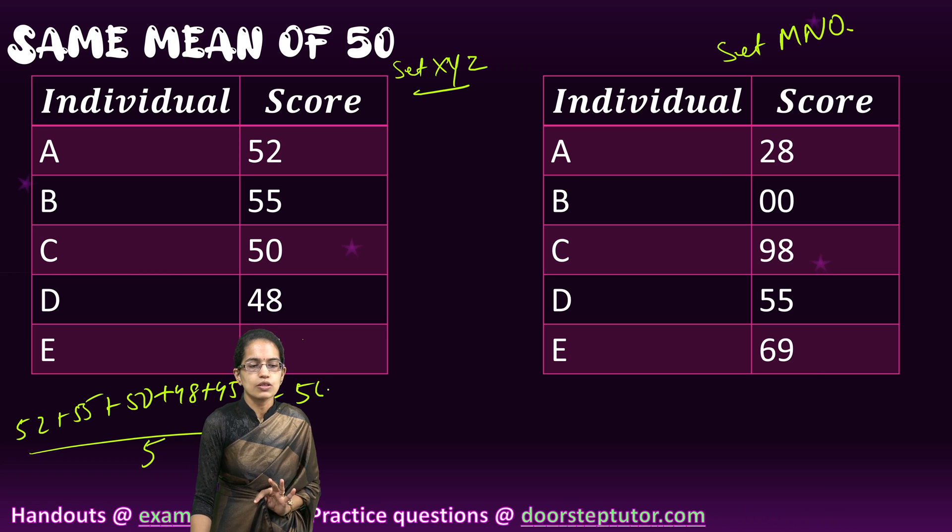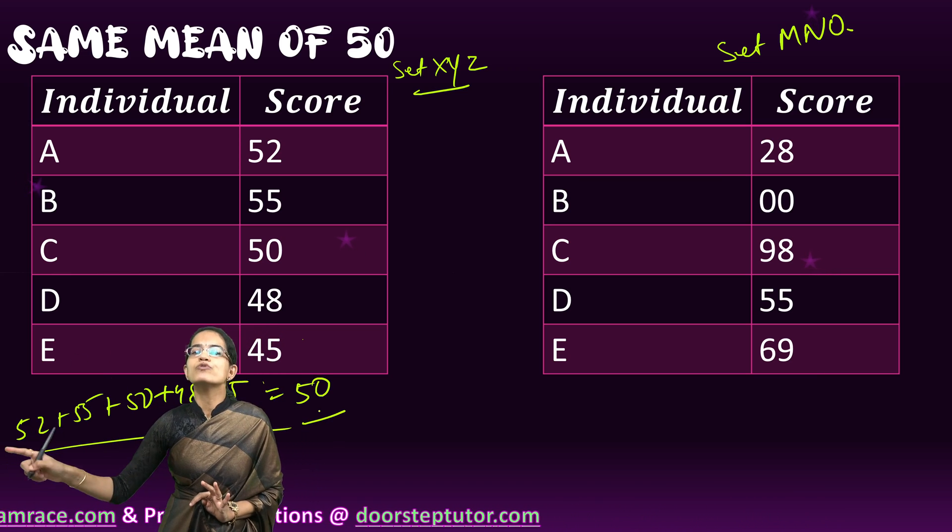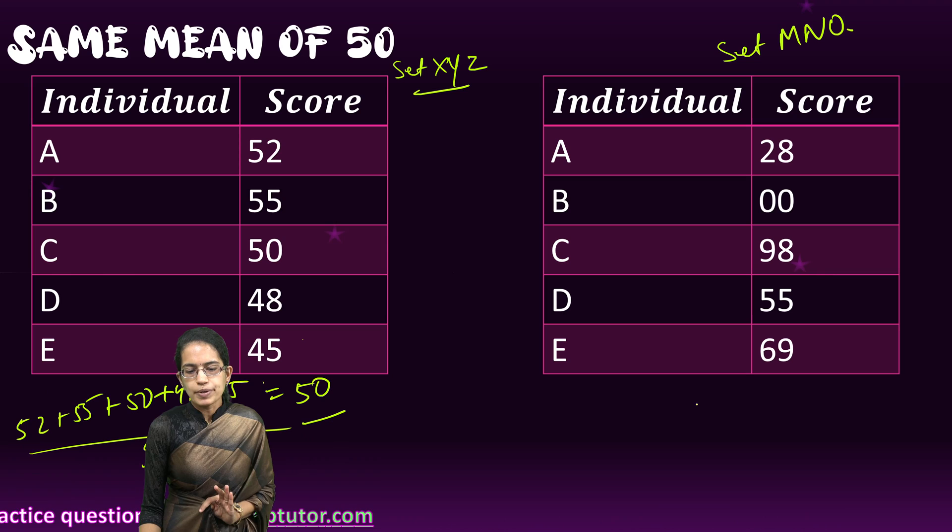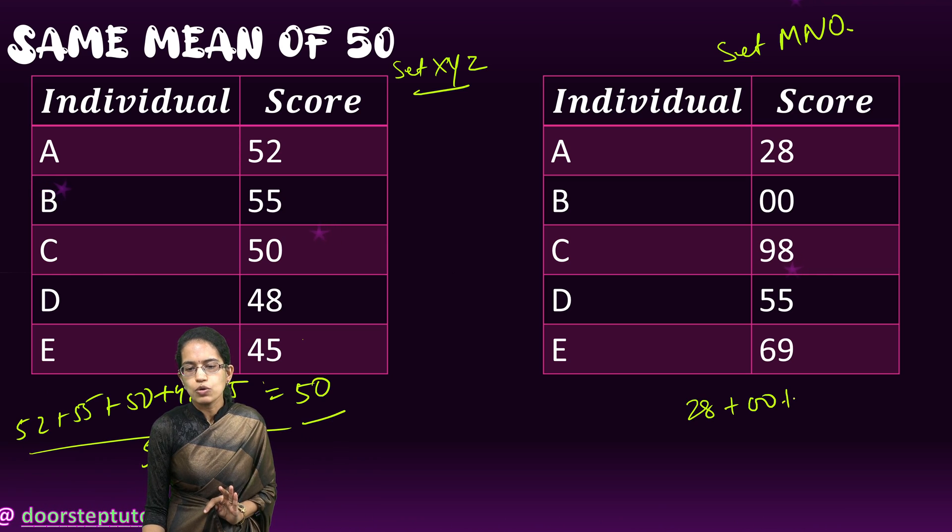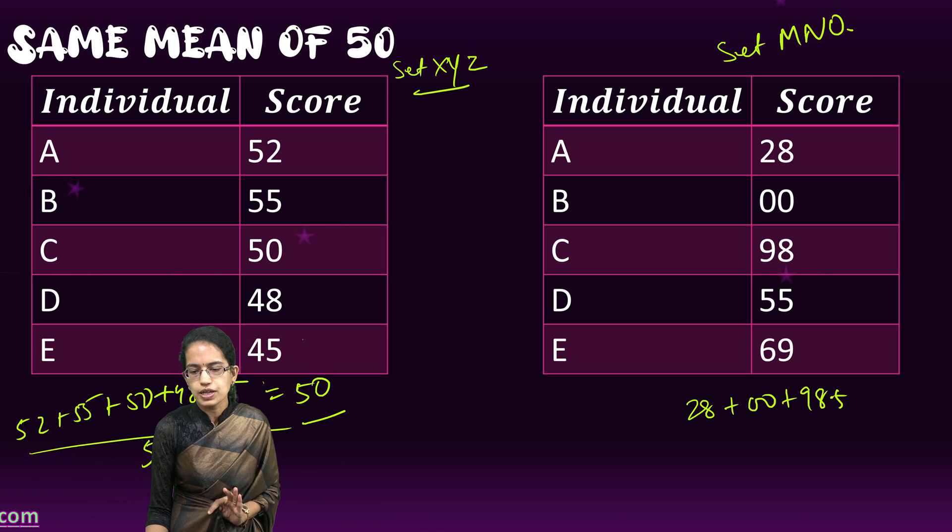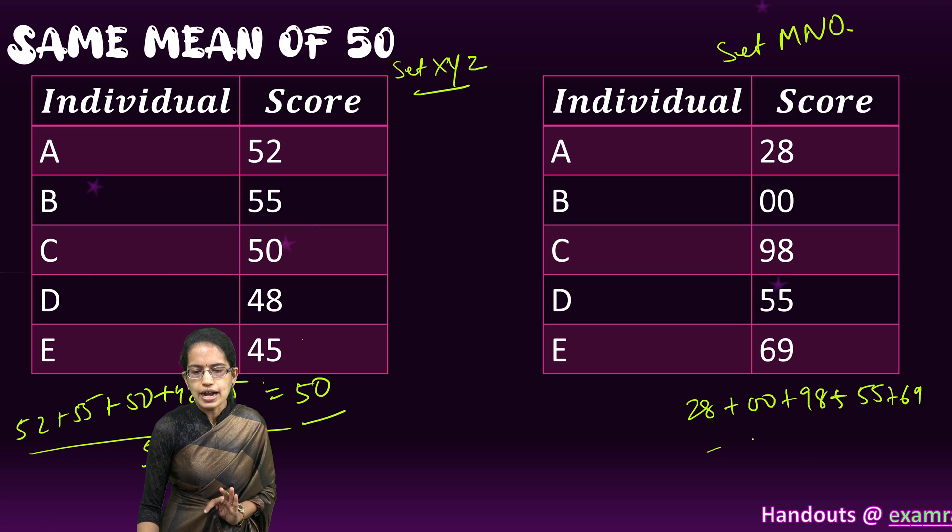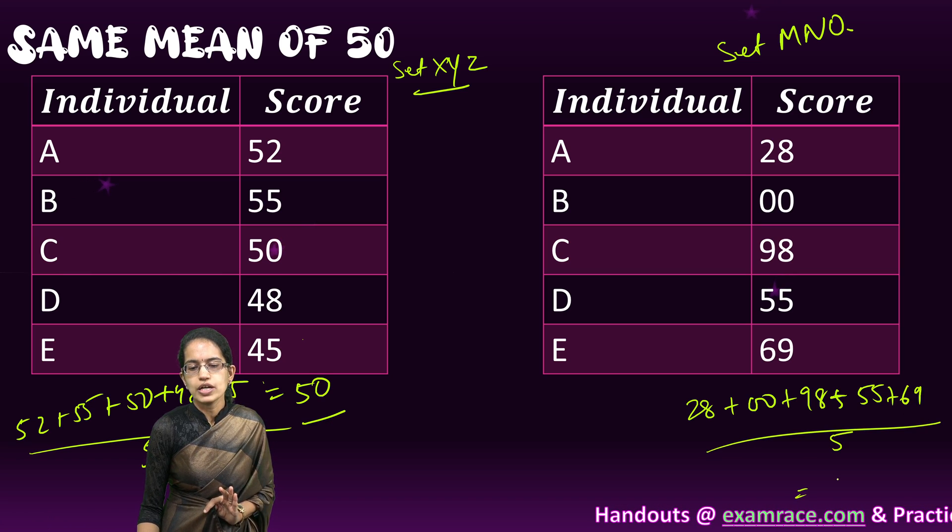Now let me move to set MNO. Set MNO: 28 plus 0 plus 98 plus 55 plus 69, I add them all and divide it by 5, so again I have a value of 50.